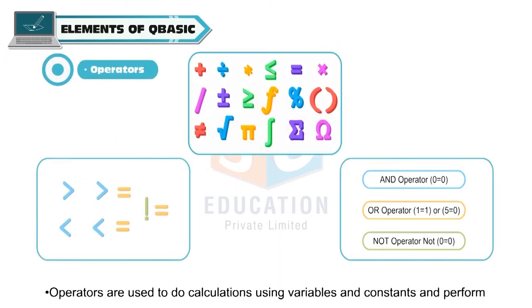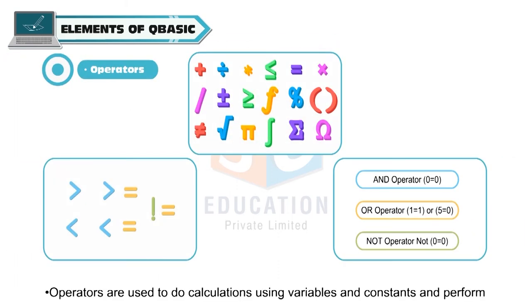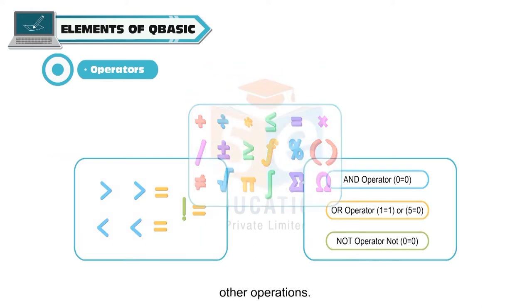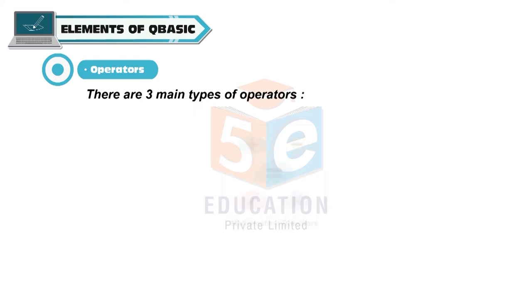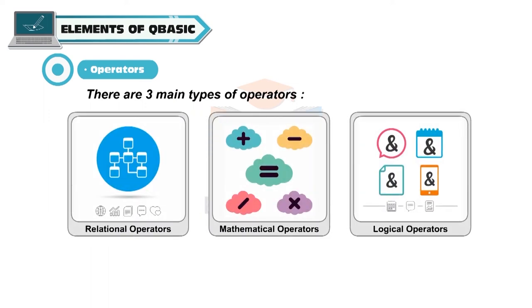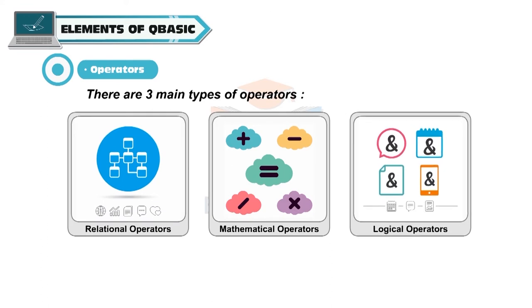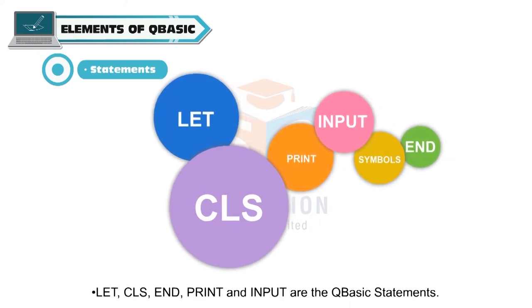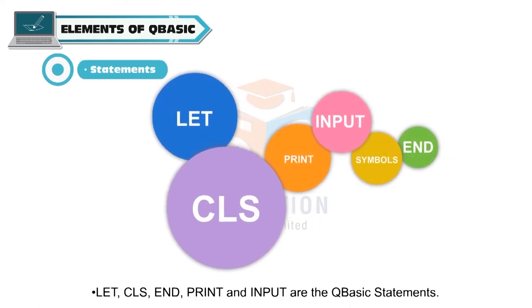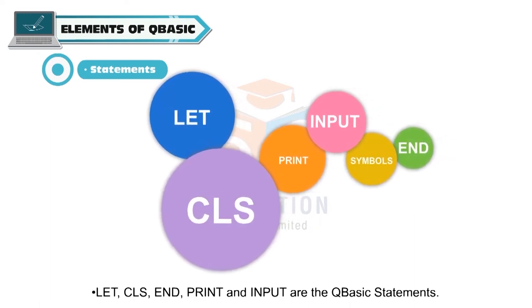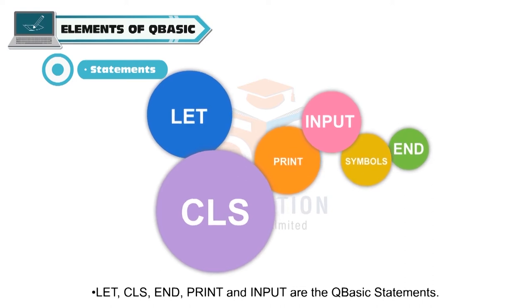Operators are used to do calculations using variables and constants and perform other operations. There are three main types of operators: mathematical operators, relational operators and logical operators. LET, CLS (clear screen), END, PRINT and INPUT are the QBasic statements.